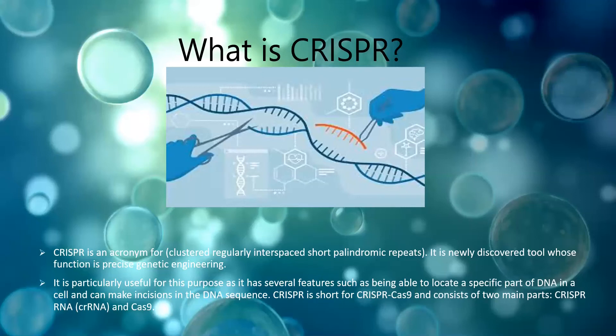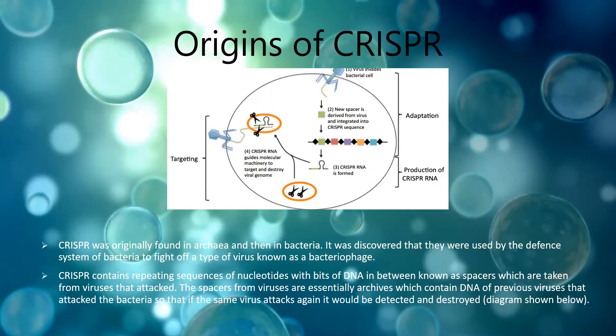All these features indicate the potential of CRISPR in genetic engineering. Regarding the origins of CRISPR, it was originally found in archaea and then in bacteria. It was discovered that CRISPR was used by the defense system of bacteria to fight off a type of virus known as bacteriophage.